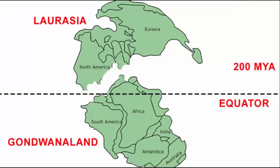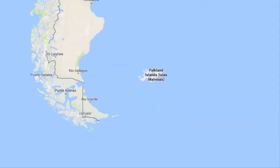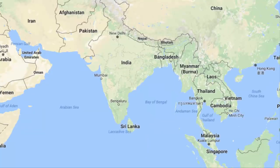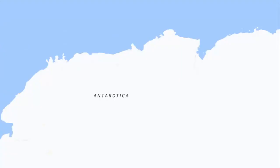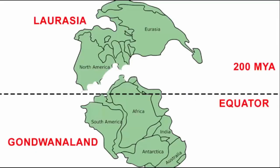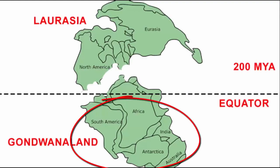The Gondwana land, which is the southern part of the initial Pangaea landmass, is known to have broken into six different landmasses: Africa, Falkland Island, Madagascar, India, Antarctica, and Australia. At the base of all these landmasses, Tillite have been found, which proves the fact that all these six landmasses have similar histories.